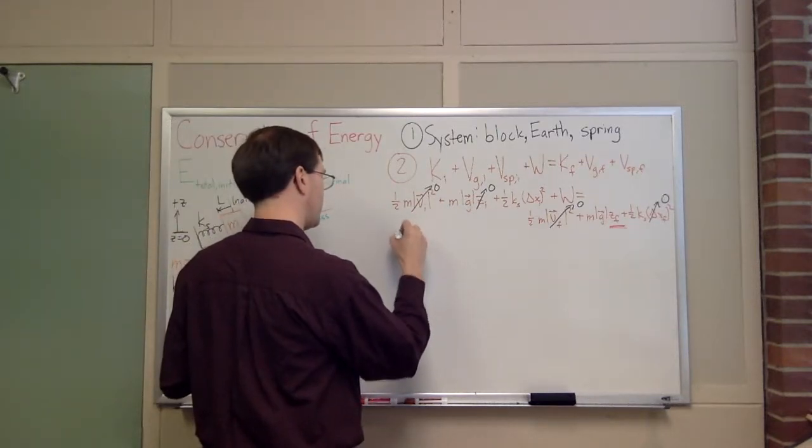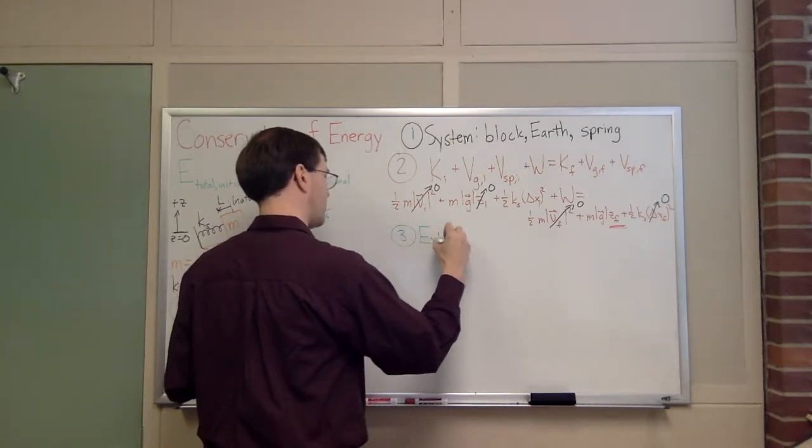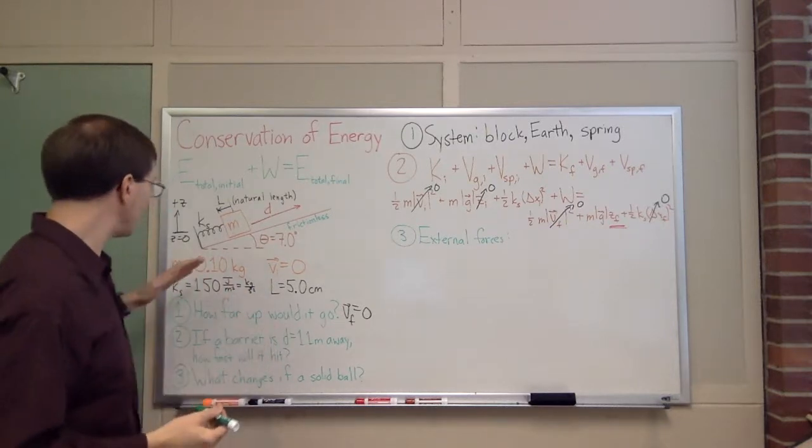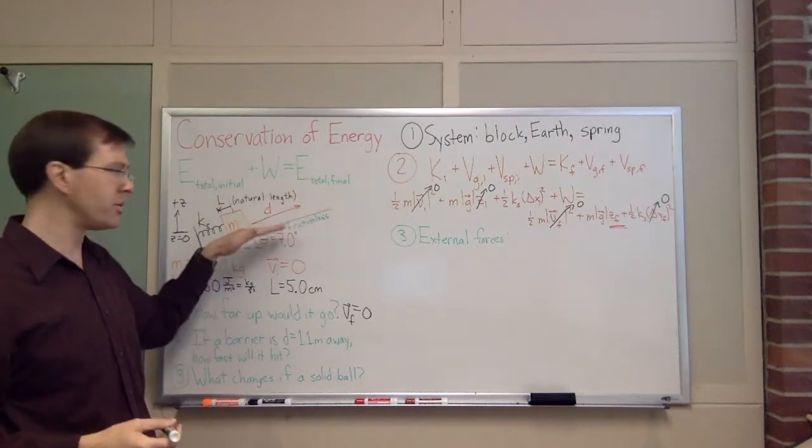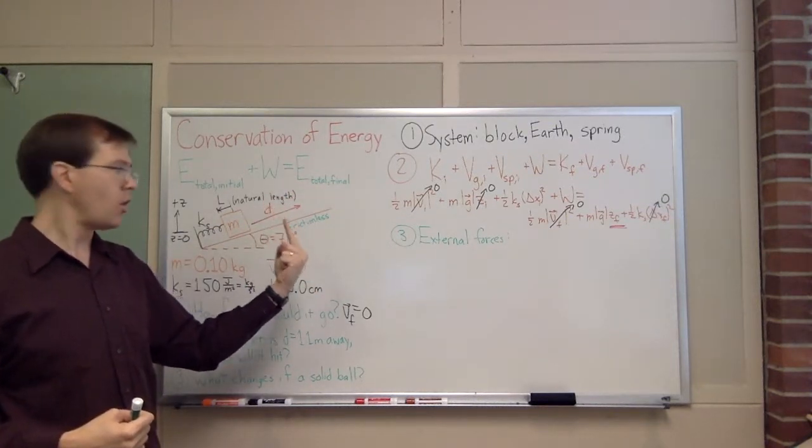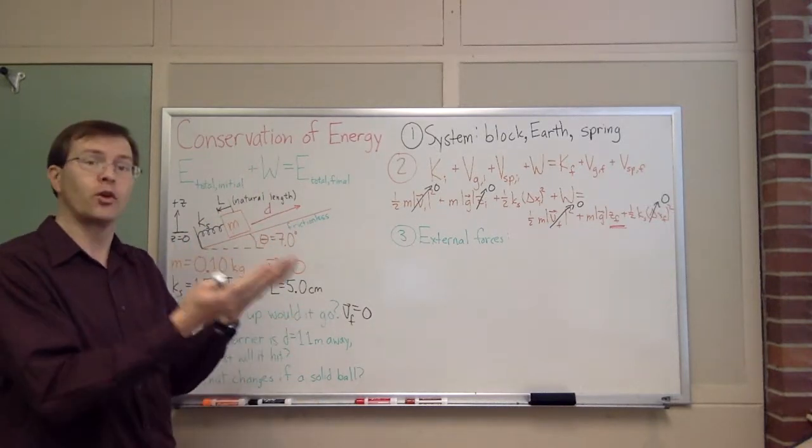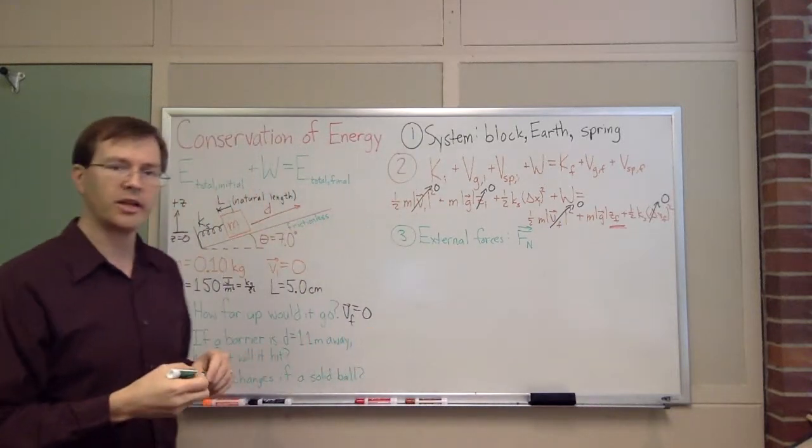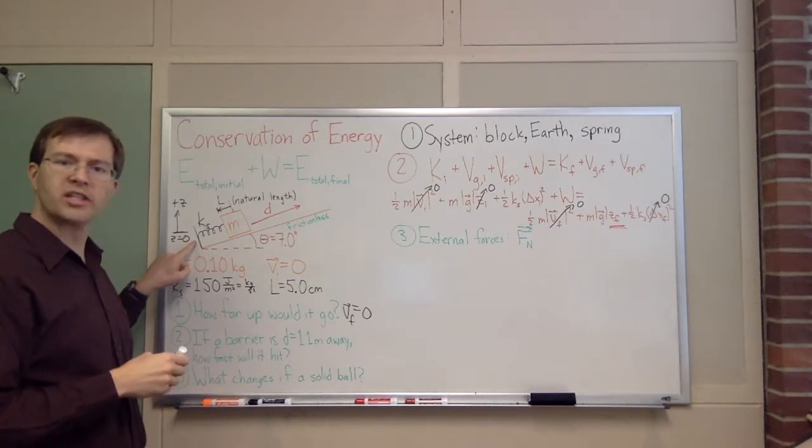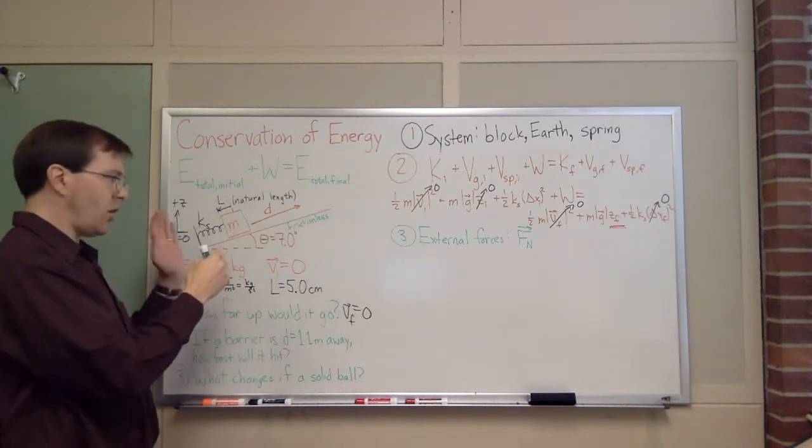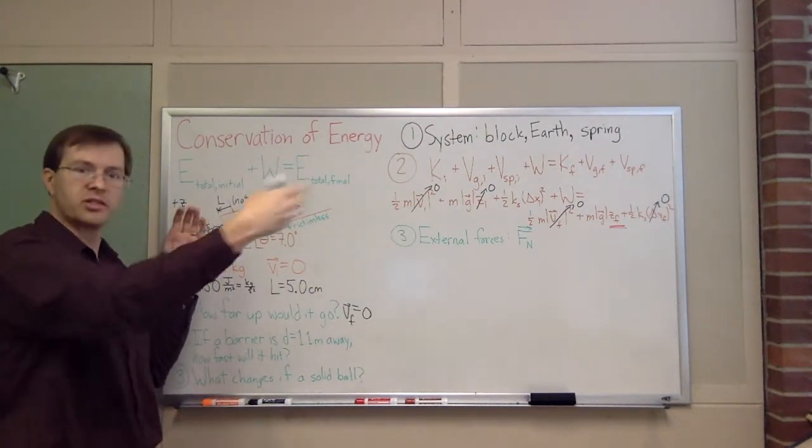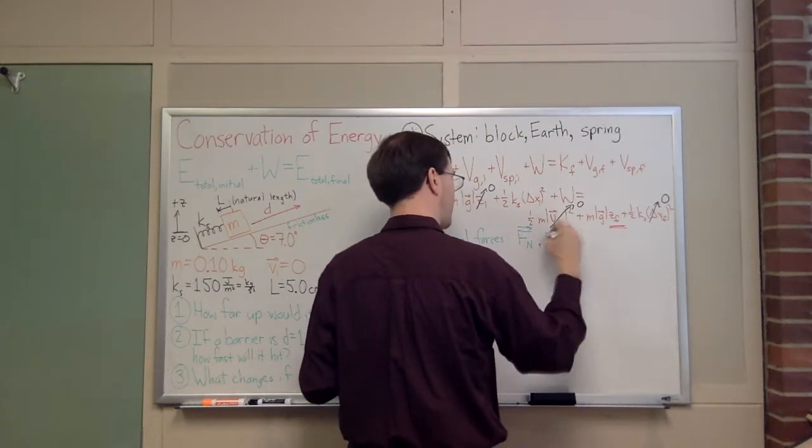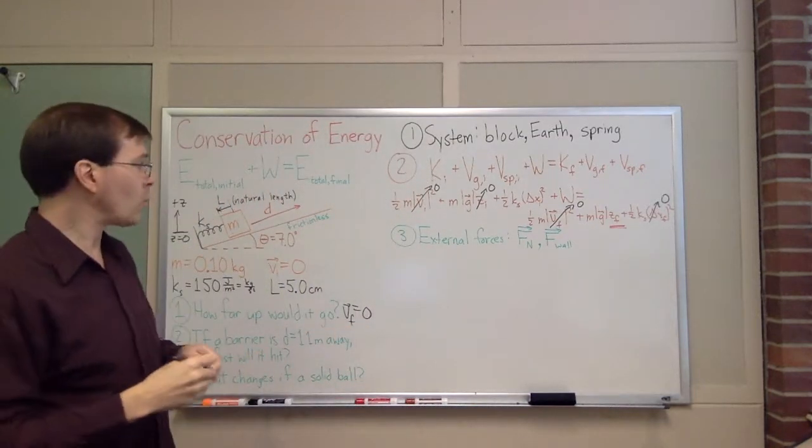The only piece left to figure out is the work piece. Let me say a word about that. Step three here is to ask about external forces, forces acting on this from outside the system. What are my external forces here? I know that as the block slides along this ramp, there is a normal force, normal mean perpendicular to the surface, holding it up so the block doesn't fall through the ramp. There is a normal force from the ramp on the block. And then the other one I can see is the force of the wall on the spring here. So normal force and force wall.